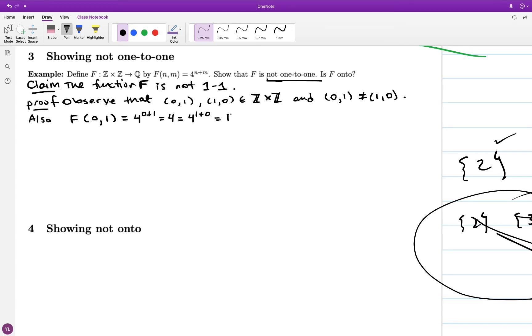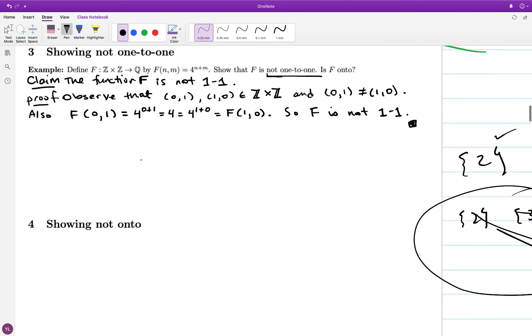And yet when I plug in (0,1) to the function, I get 4. And when I plug in (1,0) to the function, I get 4. So this is a demonstration that this function is not 1 to 1.